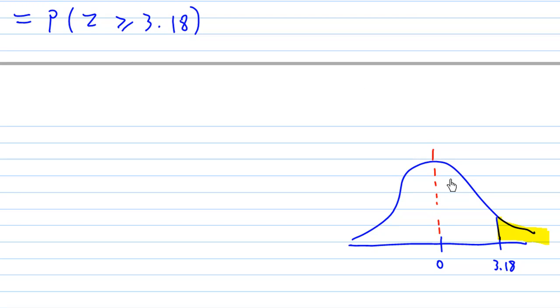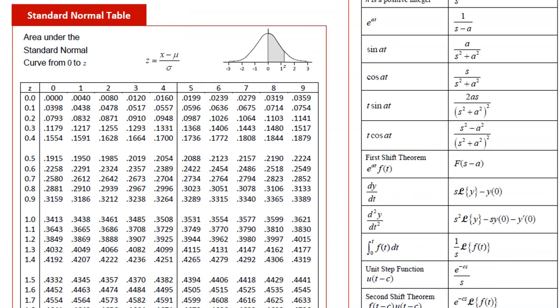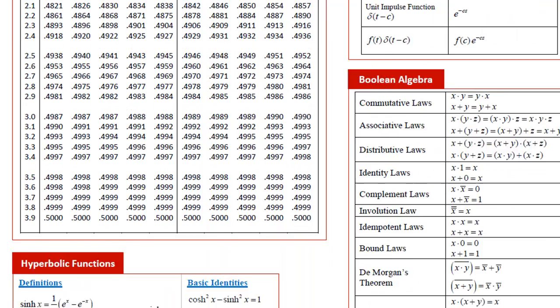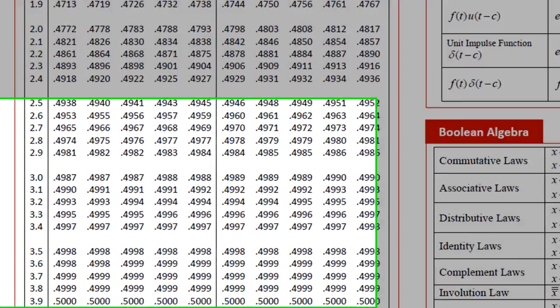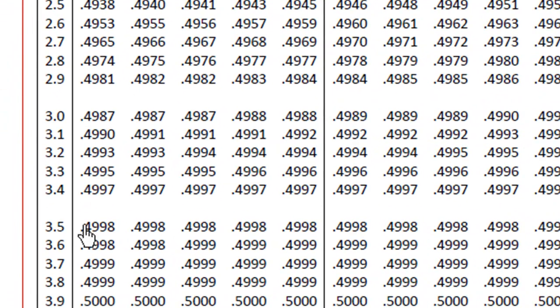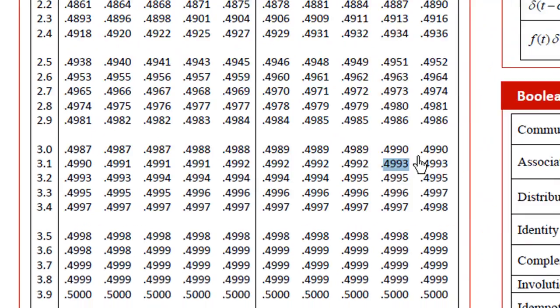You can check the table. You find out that for z equals 3.18, move down to 3.18, we will find that 3.18 gives 0.4993. So the area from 0 to 3.18 is 0.4993.